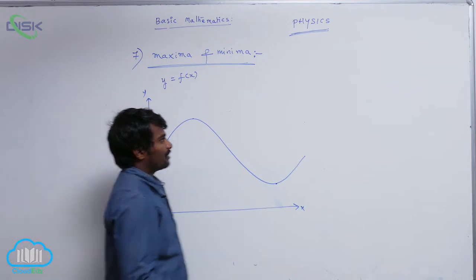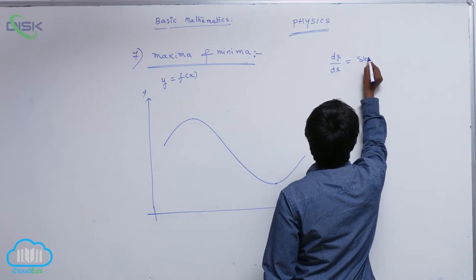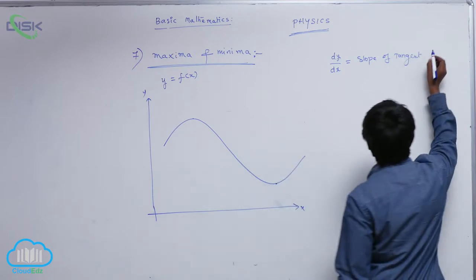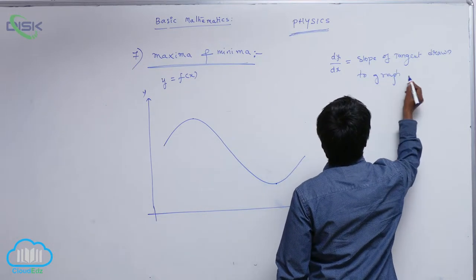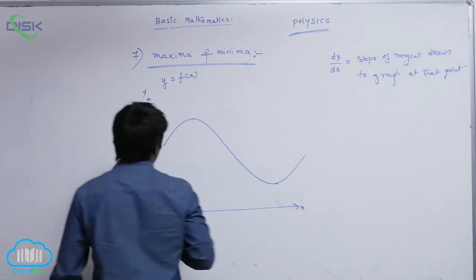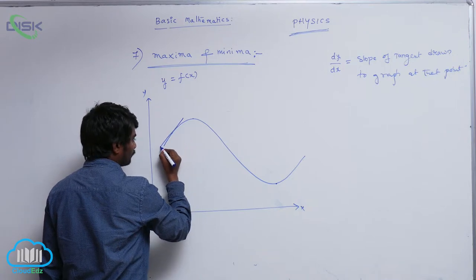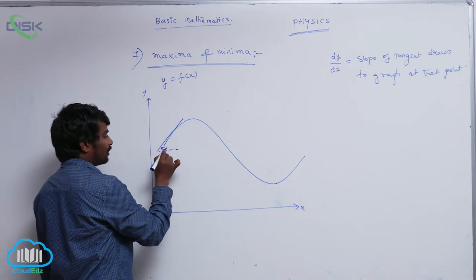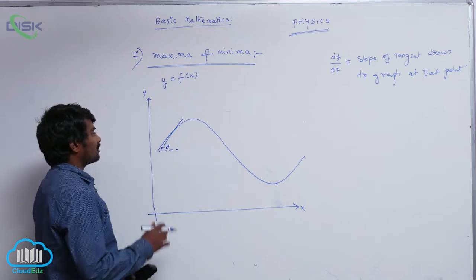See dy by dx. What do you mean by dy by dx? From the graph, it is the slope of the tangent drawn to the graph at that point. Suppose I draw a tangent to this graph at a point — how to calculate the slope? That is equal to tan theta. This theta is less than 90 degrees with the x-axis, so tan theta will be positive, and therefore dy by dx is positive.